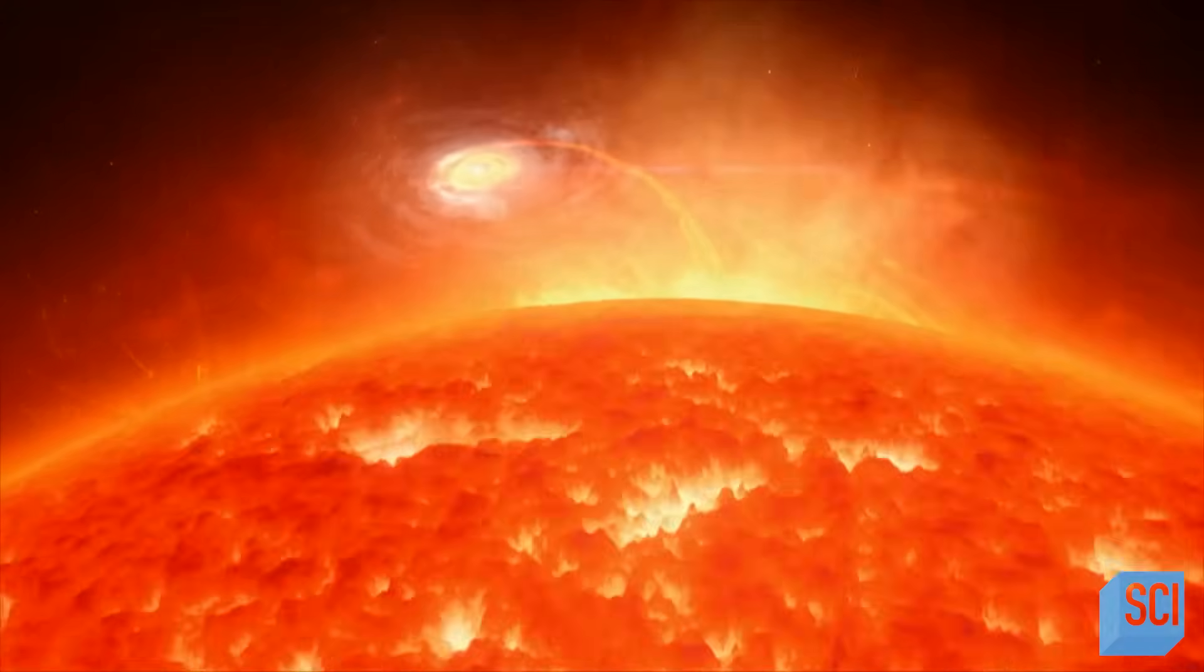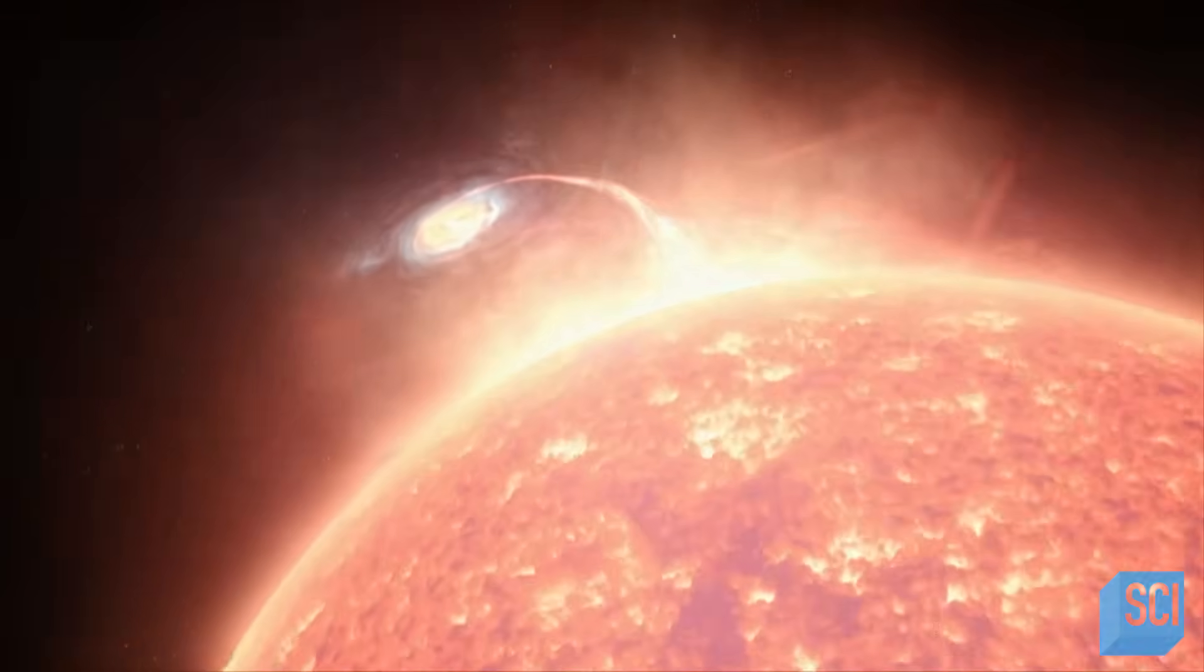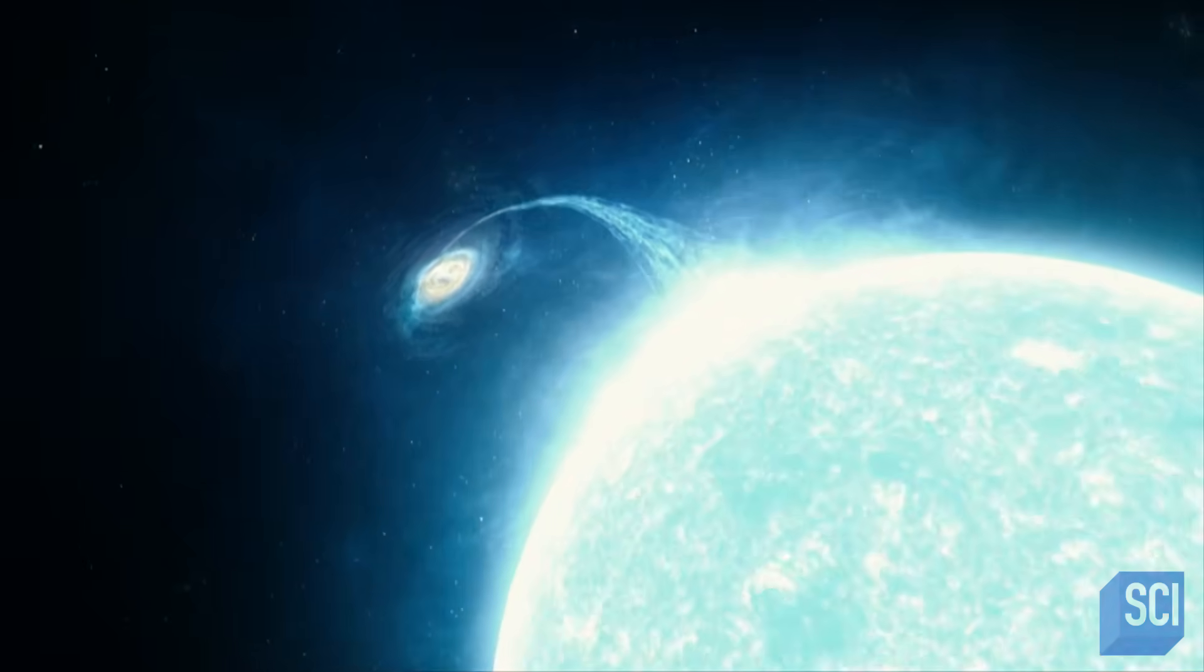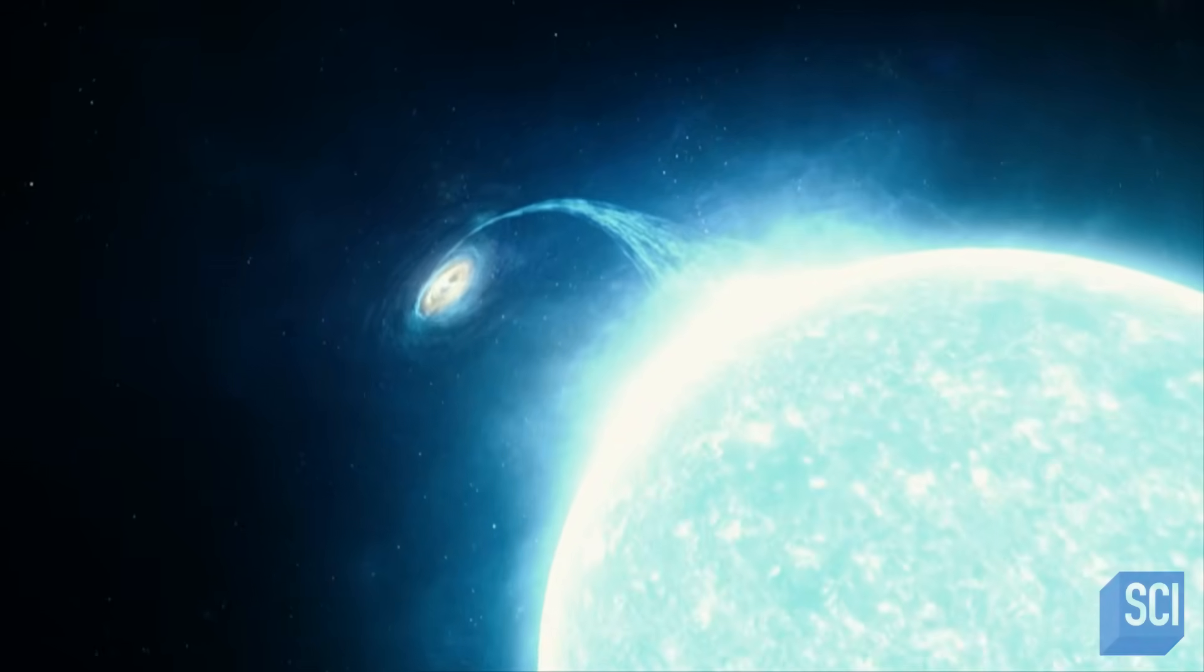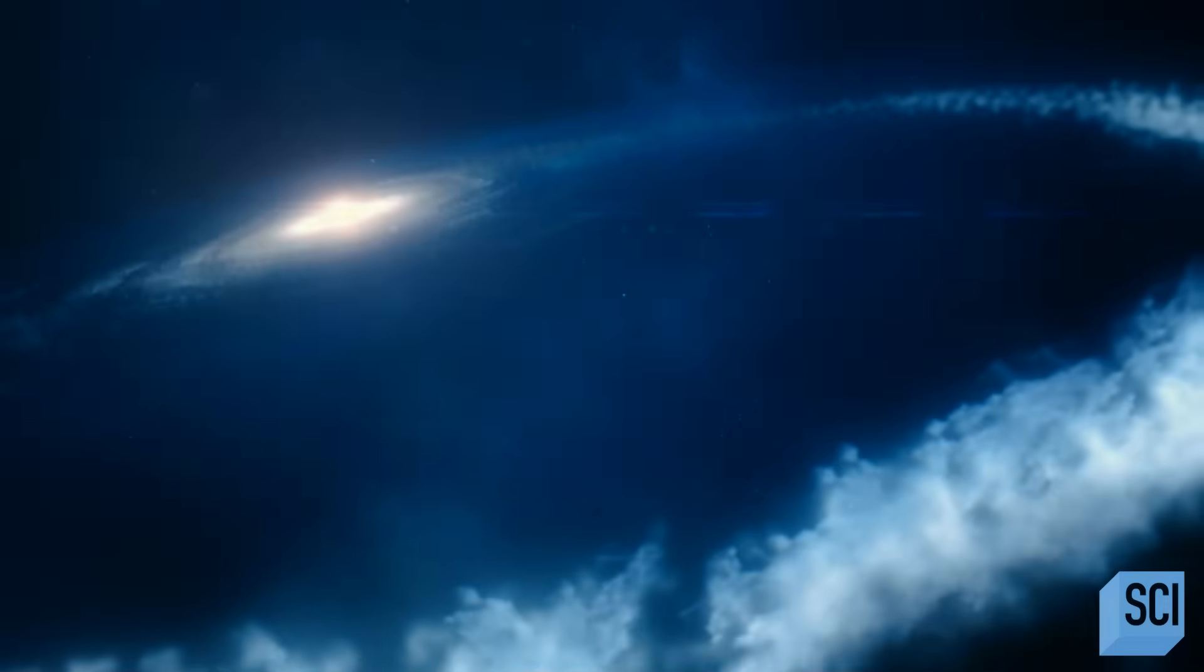But in galaxy GSN 069, the supermassive black hole turbocharged the process. It stripped off the outer layers of the red giant in a matter of days. The black hole has almost eaten all the juicy parts, all the easy-to-get-at parts of the star, leaving behind the sort of bone or the leftovers of the white dwarf.